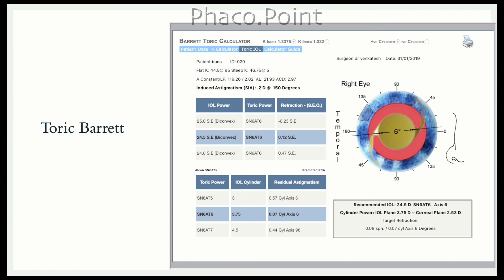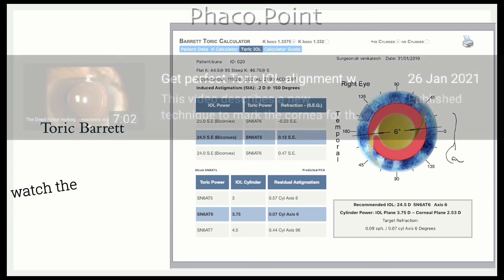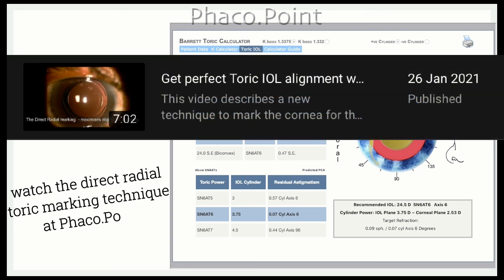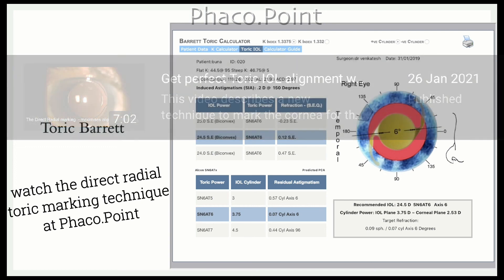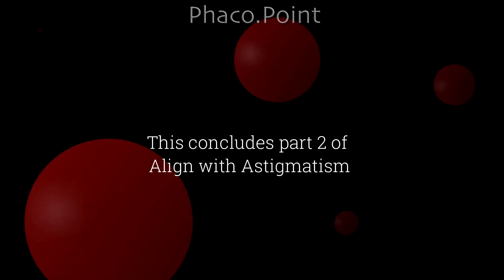The second important determinant for success is how to execute an impeccable toric IOL implantation surgery, which includes accurate marking of the axis of placement and the incision site. In my case, I mark the incision site and axis of placement without creating reference marks at 0 and 180 degrees, using radial marks made with a hockey stick blade — a method I call the direct radial toric marking system. This concludes the lecture series on aligning with astigmatism. We hope you have found it useful, and I thank you all for your very patient hearing.